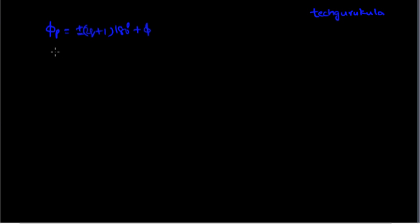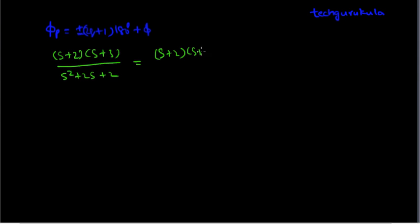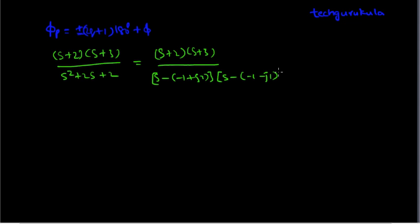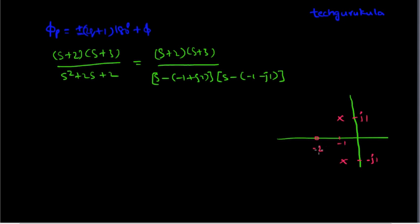Let us take a problem where the open loop transfer function is (s plus 2)(s plus 3) over (s squared plus 2s plus 2). We can rewrite the denominator as (s minus (minus 1 plus j1)) times (s minus (minus 1 minus j1)). So in the S-plane the poles are at minus 1 plus j1 and minus 1 minus j1, and there are two zeros at minus 2 and minus 3. We want to find the angle of departure for the complex pole P at minus 1 plus j1.